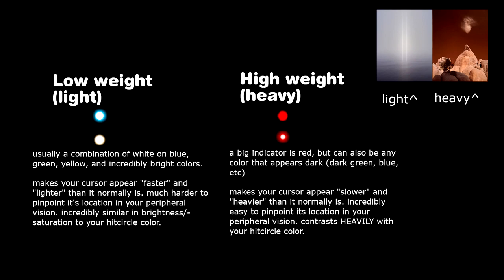Another indicator is how much it contrasts with your hit circle color. So for example, if let's say I use the first cursor from the top, the white and blue one. Now if my hit circles are similarly white and blue, like really white and really blue colors,